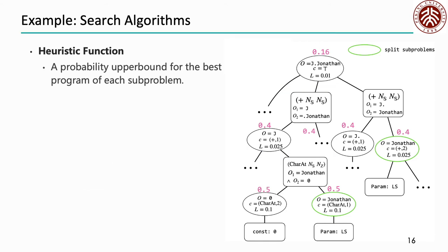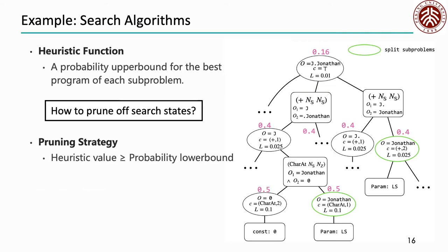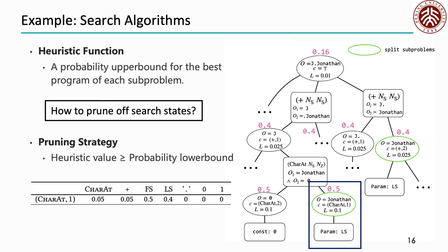The only condition for pruning is that for a solvable subproblem, its heuristic value, which is an upper bound, should be larger than the lower bound. Therefore, MaxFlash prunes all subproblems when this condition is violated. For example, when solving the selected subproblem, we could directly skip all operators with probability smaller than the lower bound.